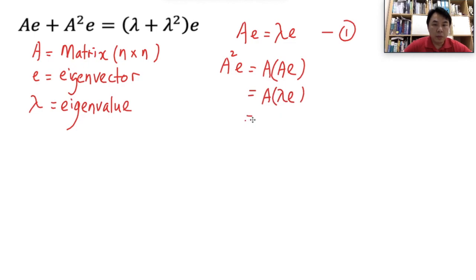And then, from here, indirectly, because eigenvalue is a scalar, because it's a scalar, therefore...